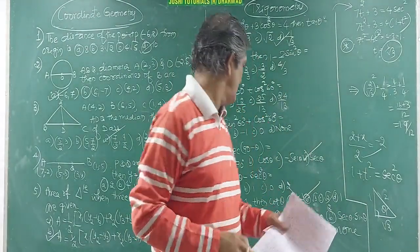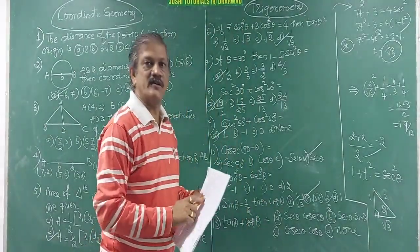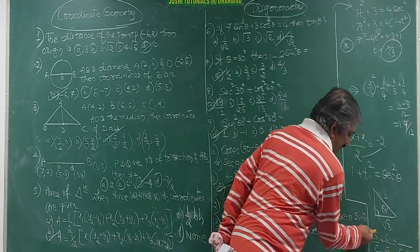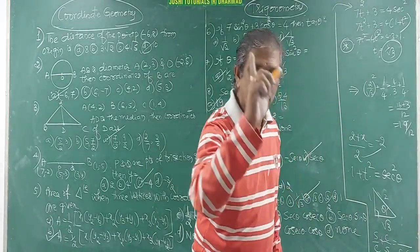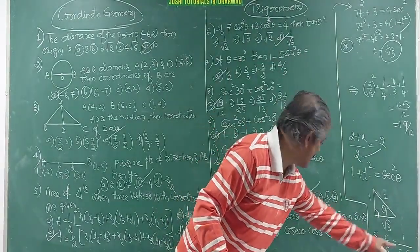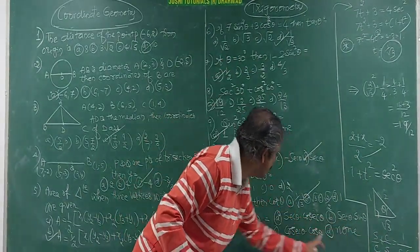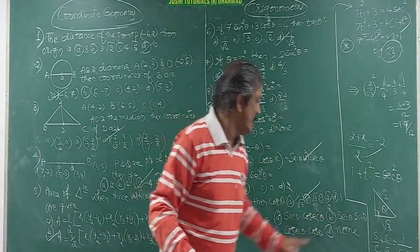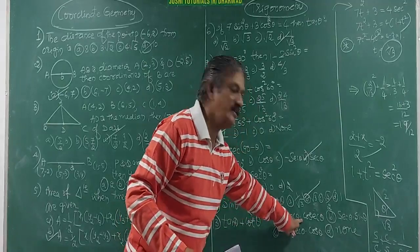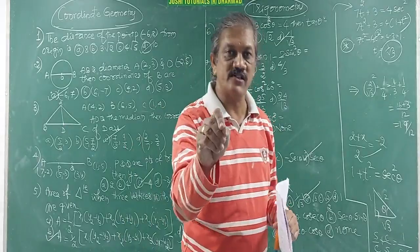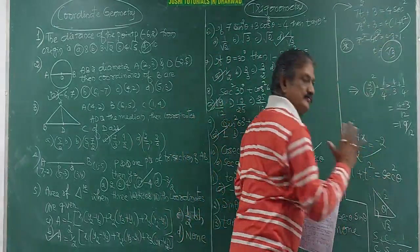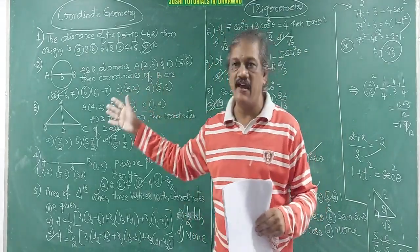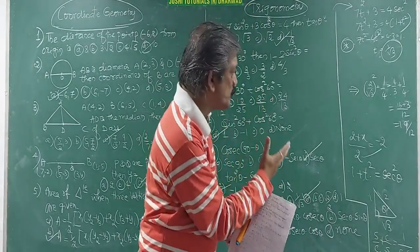Next: tan θ + cot θ. Write tan θ = sin/cos and cot θ = cos/sin. Adding them: (sin²θ + cos²θ)/(cos θ·sin θ) = 1/(cos θ·sin θ). That equals sec θ·cosec θ. Searching the options: sec is there and cosec is there, so the answer is A (sec θ·cosec θ). Use your brain in the exam and work quickly.